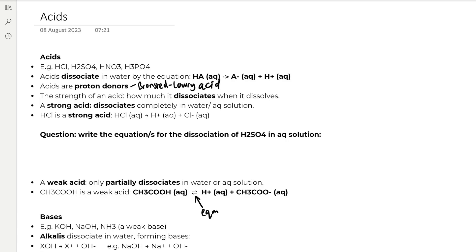The strength of an acid depends on how much it dissociates when it dissolves, so for example a strong acid completely dissociates in water or aqueous solution. HCl is an example of a strong acid, so you can see in the equation we have an arrow pointing in the forwards direction only, so it's fully dissociating to form H+ and Cl- ions.